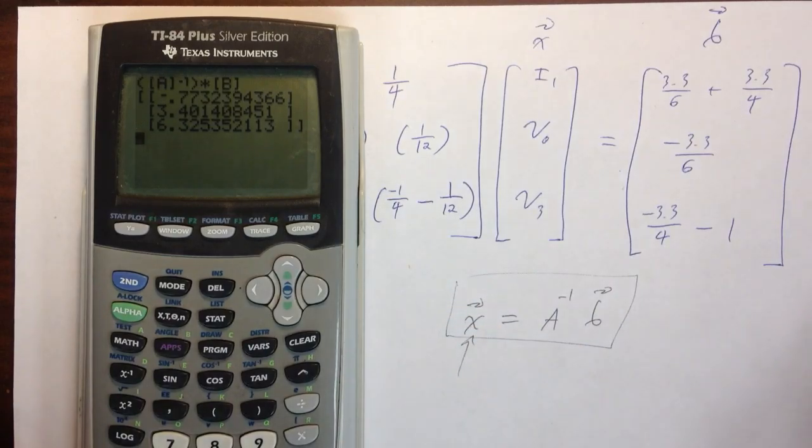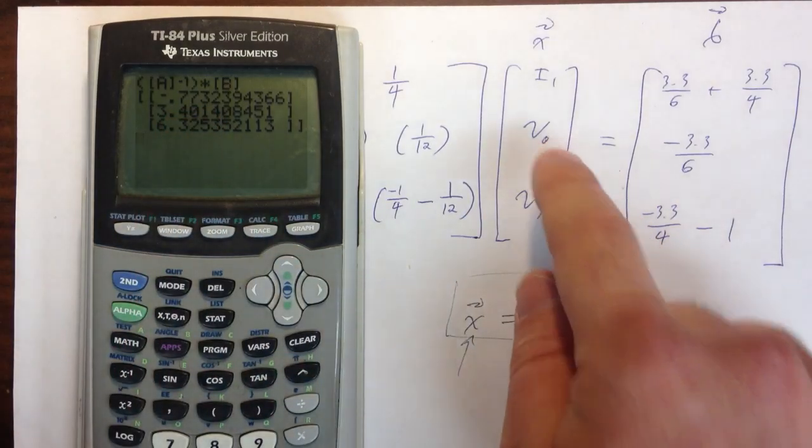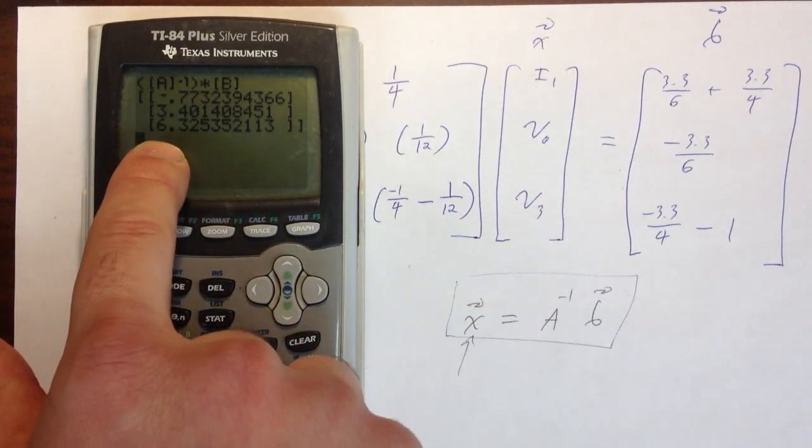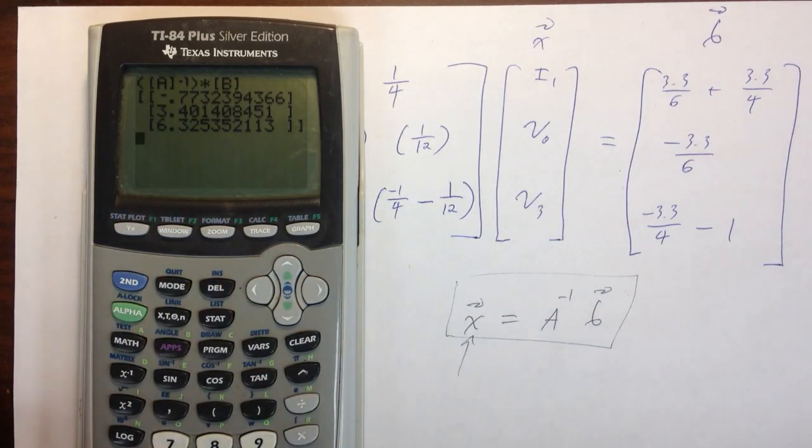So for this particular problem, I1 is minus 0.77, V0 is 3.40, and V3 is 6.325, I guess. That's pretty much it. Hopefully you found this useful, and hopefully I'll see you in a future video. Thanks for watching.